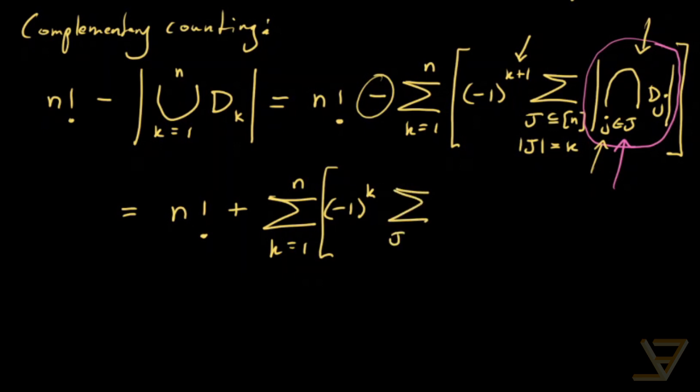And the sum as before, we're going to make this simpler in just a second. But for now we're going to leave it as is. And this sum is equal to n minus k factorial. Because the rest are fixed points and the first k points in this j set, they're the fixed points. And the rest we have to map bijectively. And as we said before, the number of bijections is equal to the factorial of the number of elements in the domain.